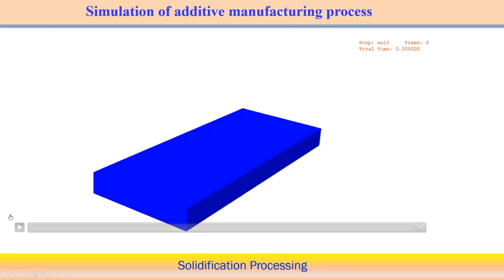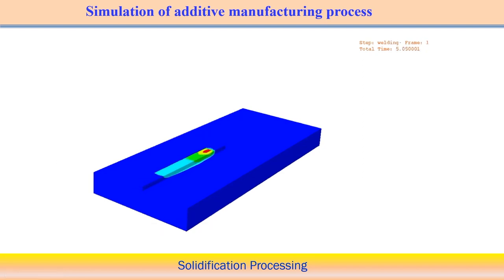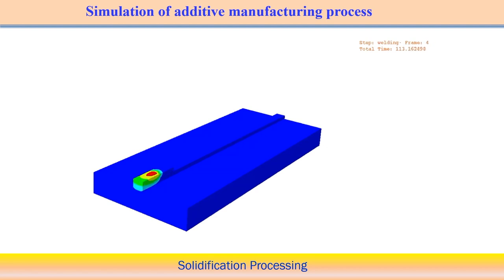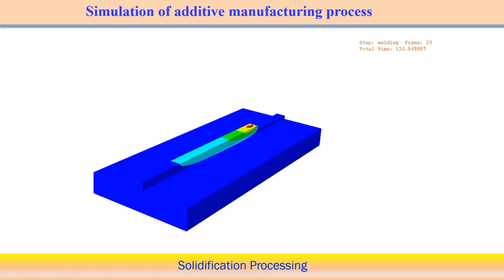To understand the additive manufacturing process better, we show some simulation. You can see material deposition and how temperature variation occurs along the path. Element activation-deactivation techniques are used — one layer is deposited and another layer is depositing above it. We can see how temperature develops on one side and the other side gradually cools.